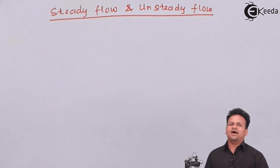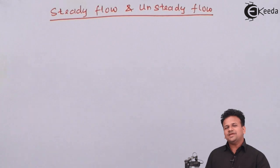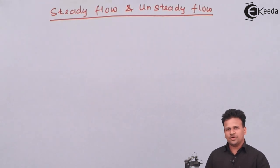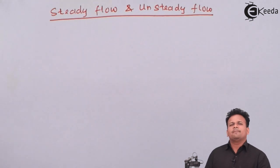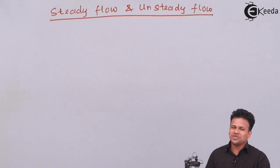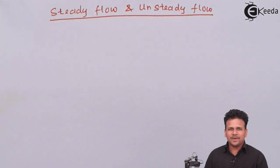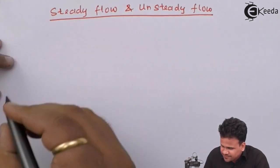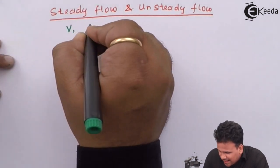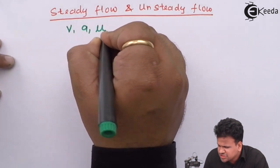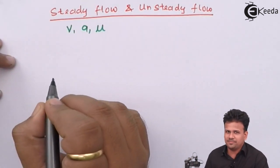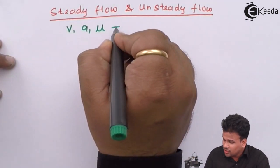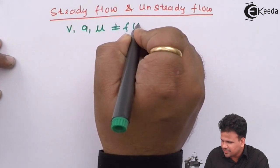Now what do we mean by steady flow? Steady flow is the flow of a fluid in which its fluid parameters are not dependent upon time. That is, velocity, acceleration, and viscosity — all three fluid parameters — are not a function of time.